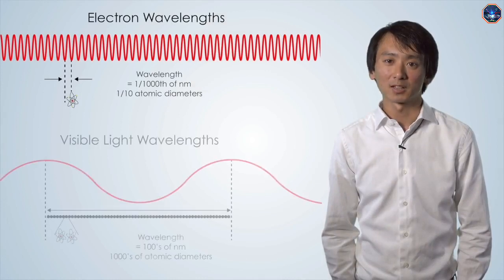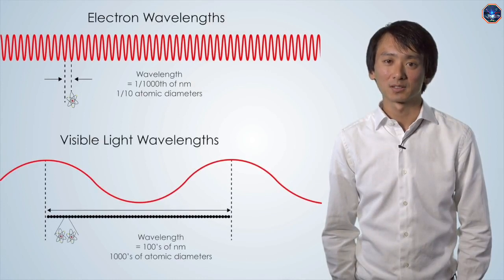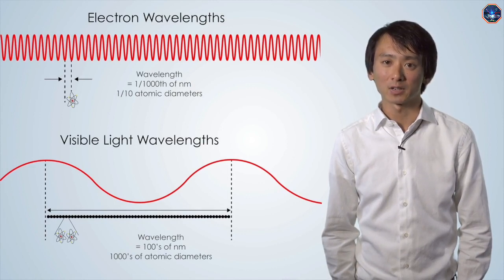This is possible because instead of using light for imaging, we use electrons. Electrons, much like light, can behave as waves. The wavelengths are much shorter than light, on the order of one trillionth of a meter, or about one-tenth of a diameter of an atom.